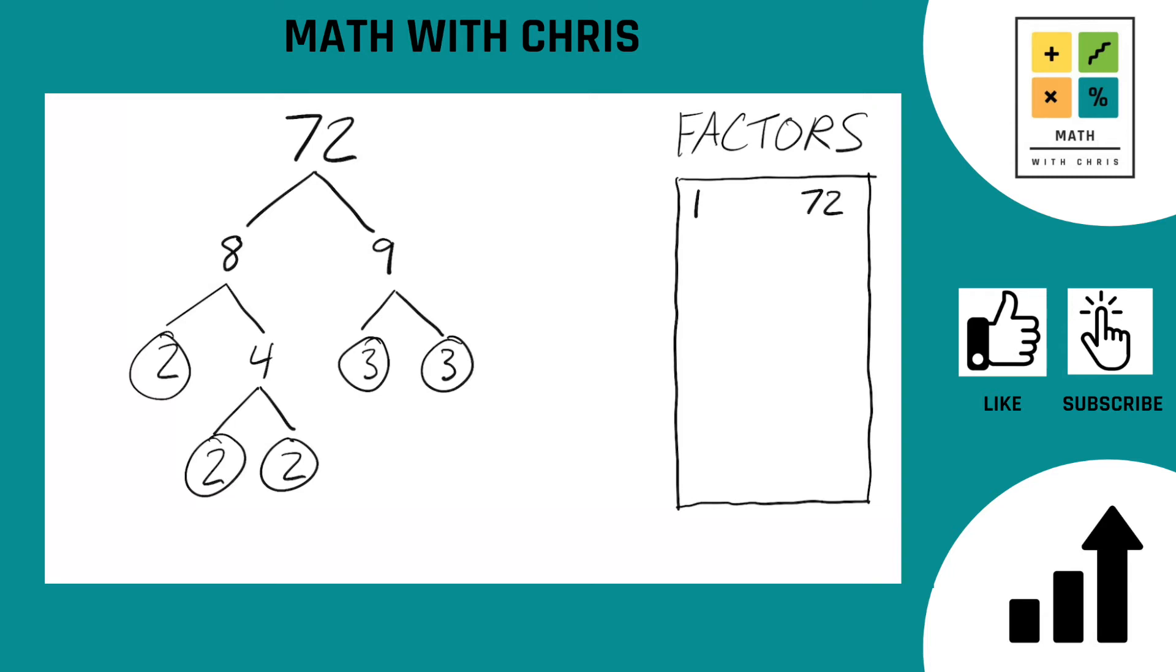And as you can see, our factor tree is done as any branch you take ends up in a, any path you go with ends in a circled prime number. So our prime factors of 72, we have a two, a two, a two, a three, and a three.